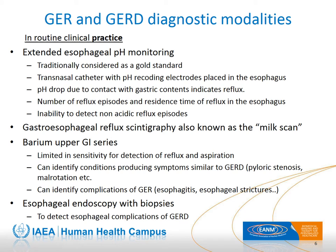It is important to correctly diagnose the presence of reflux and/or aspiration, because the signs and symptoms of gastroesophageal reflux disease are not specific. Common diagnostic modalities include extended esophageal pH monitoring, traditionally considered the gold standard. This invasive procedure requires placement of a transnasal catheter with pH recording electrodes in the esophagus. When the electrodes record a drop in esophageal pH below 4, it indicates a reflux episode. A limitation is that it is designed to record only acidic reflux; some postprandial reflux episodes are non-acidic but can still be associated with complications.